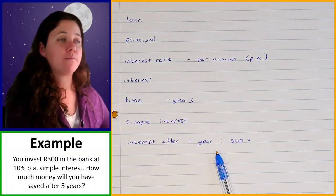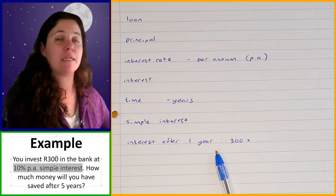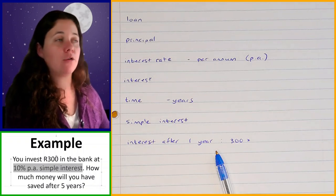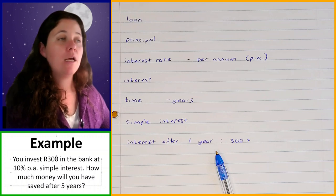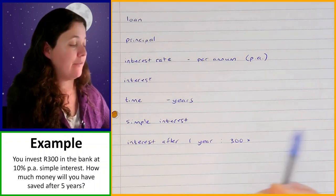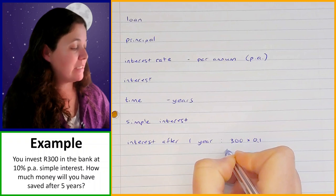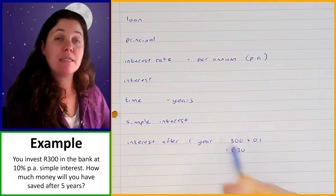The question says 10% per annum simple interest. Simple interest means it is always worked out on the principal amount — it's not a changing interest amount. The 10% is the percentage we're working with, and per annum means every single year you'll earn 10% of the 300 rand as interest. So we take 300 multiplied by 0.1, because 10% is the same as 0.1, and that gives us 30 rand. That is how much interest you would earn for one year.